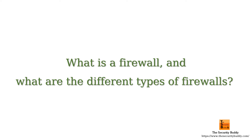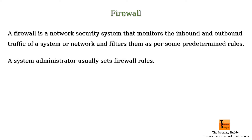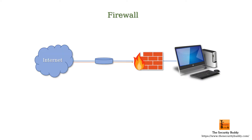What is a firewall and what are the different types of firewall? A firewall is a network security system that monitors the inbound and outbound traffic of a system or network and filters them as per some pre-determined rules. A system administrator usually sets firewall rules. When a network packet reaches a system, the firewall monitors it and compares it with the pre-determined security rules. If the packet matches any of the pre-configured rules, the firewall filters the network packet.